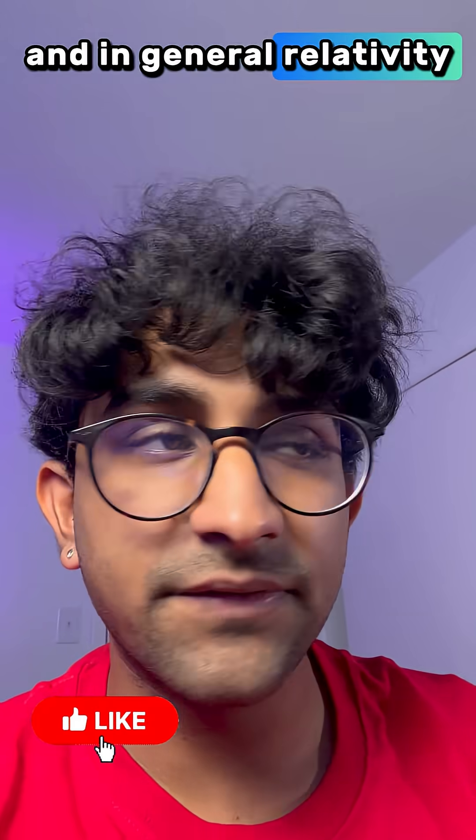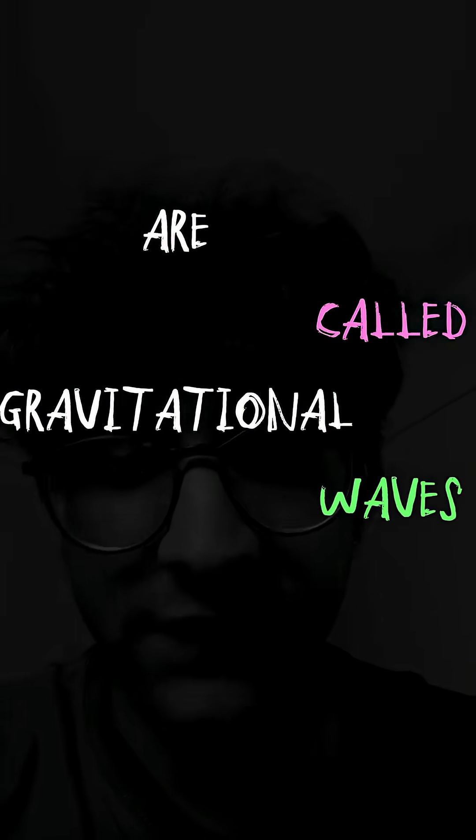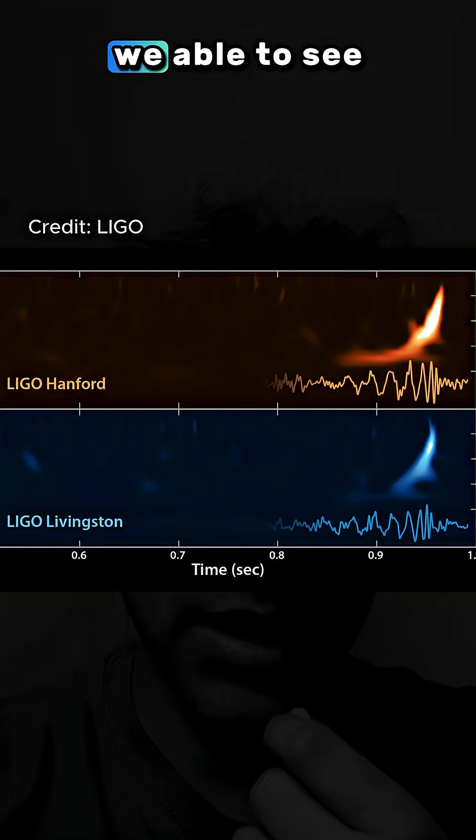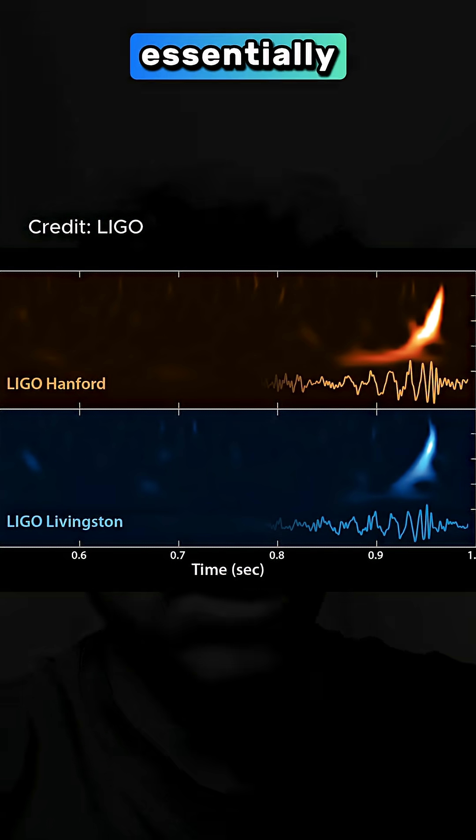In general relativity, those ripples are called gravitational waves, and they travel at the speed of light. And only recently were we able to see them and measure them.